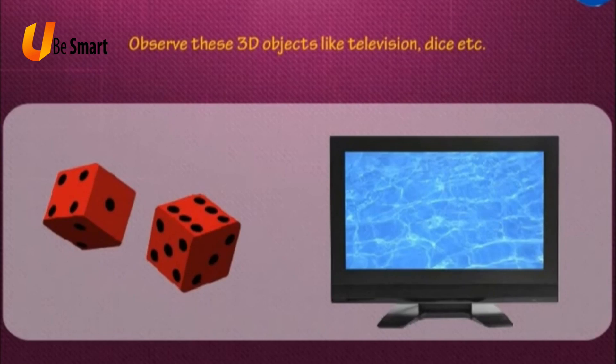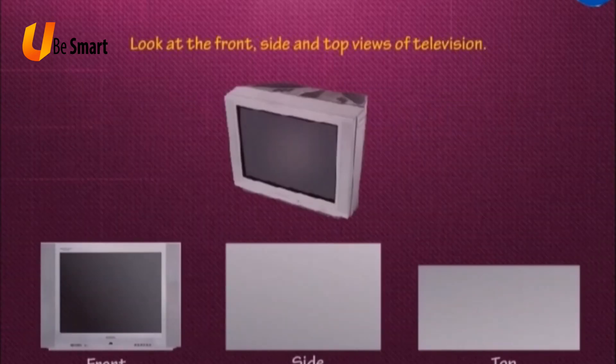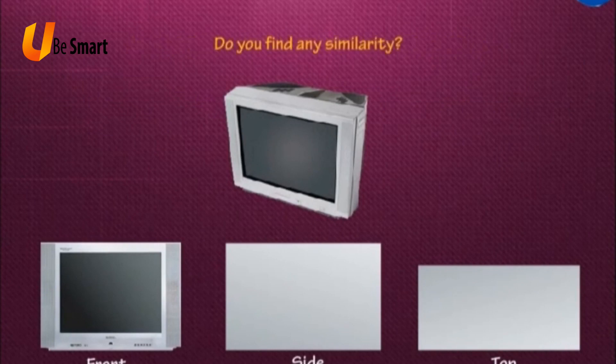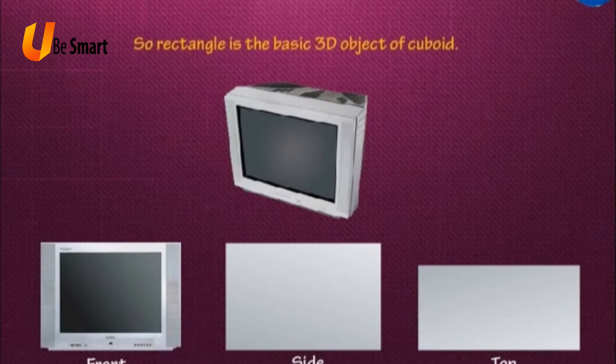Basic 3D objects. Observe these 3D objects like television, dice, etc. The shape of television looks like a cuboid. Look at the front, side and top views of television. Do you find any similarity? All of them are rectangles. So, rectangle is the basic 3D object of cuboid.